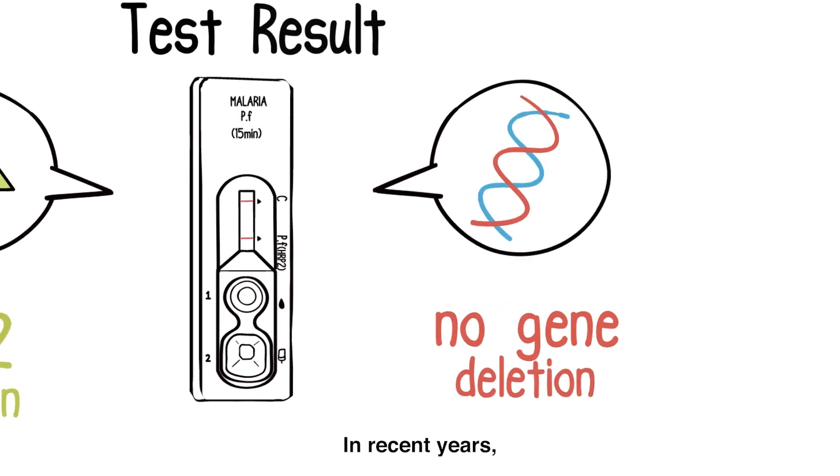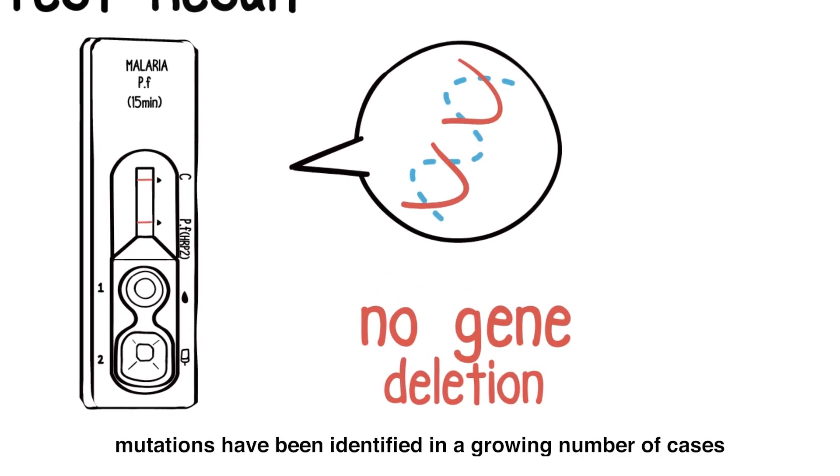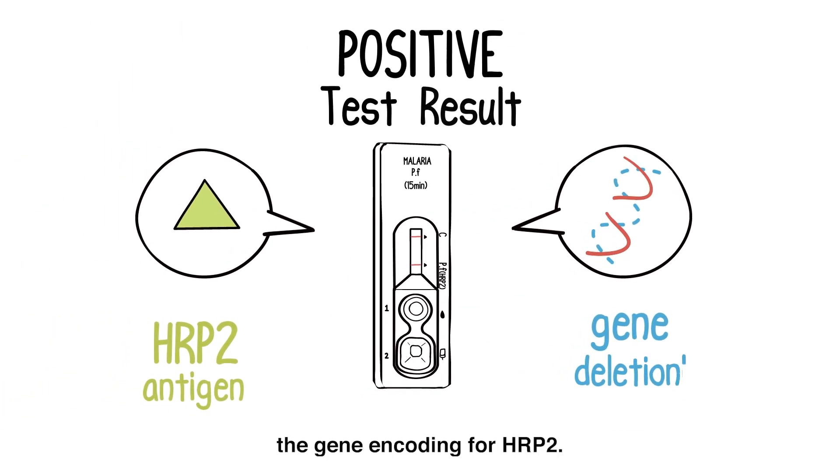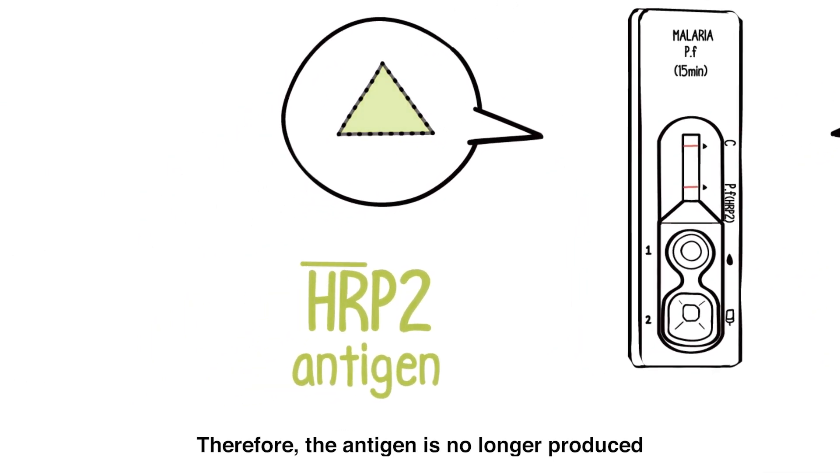In recent years, mutations have been identified in a growing number of cases where PF parasites are completely missing the gene encoding for HRP2. Therefore, the antigen is no longer produced and cannot be detected in a person's blood.